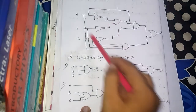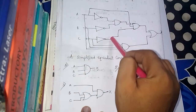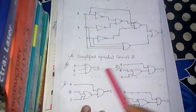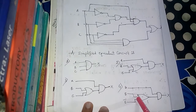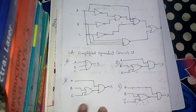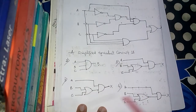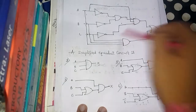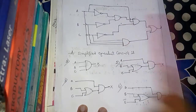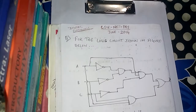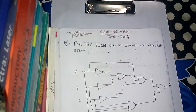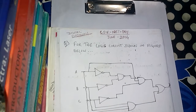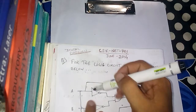The approach is: we will find a Boolean expression for this circuit, then find the Boolean expression for all four option circuits, and see which one matches the Boolean expression of the given circuit.